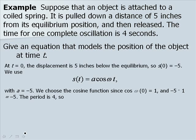The period is 4, so we see that 2 pi over omega, which is the equation for our period, equals 4. And when we solve this for omega, we'll end up with an angular speed of pi over 2.